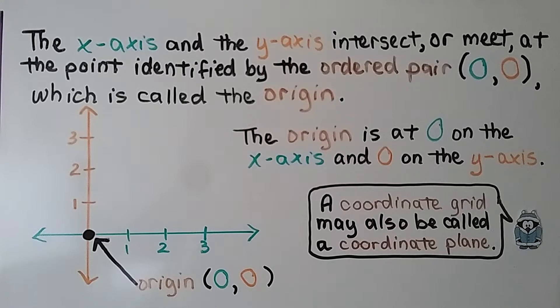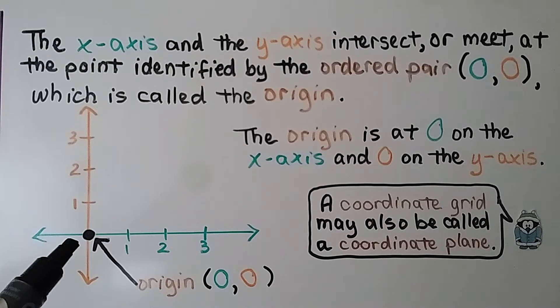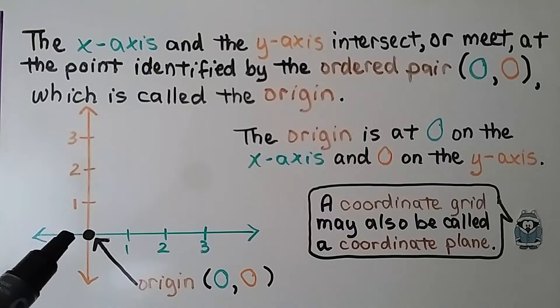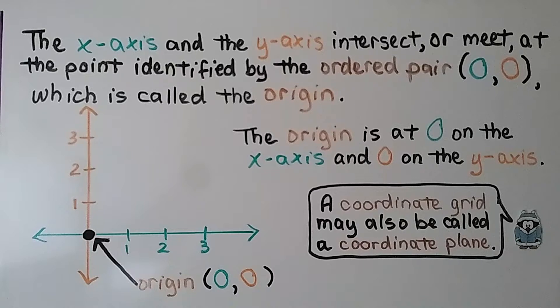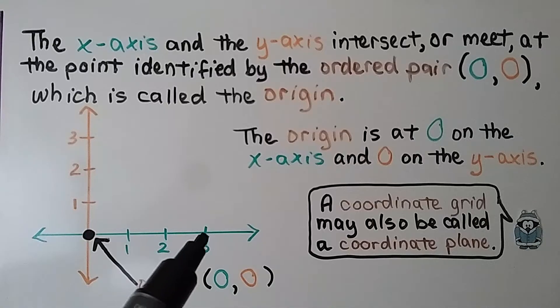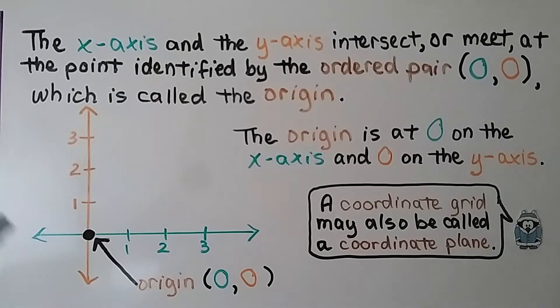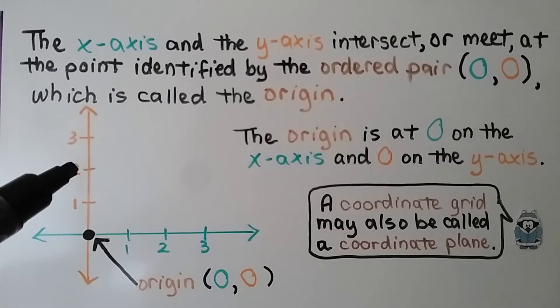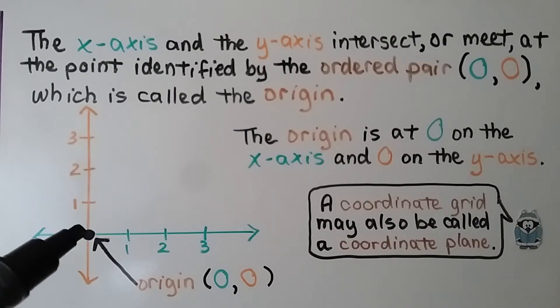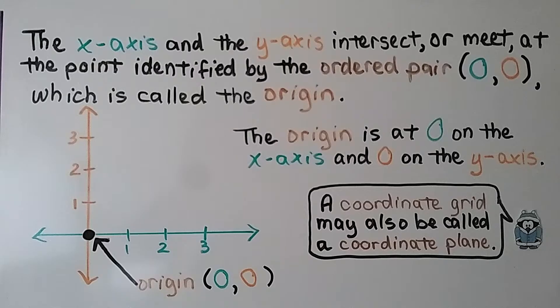Where the x-axis and the y-axis intersect, or meet, at the point identified by the ordered pair 0, 0, which is called the origin. The origin is at 0 on the x-axis and 0 on the y-axis. And a coordinate grid may also be called a coordinate plane.